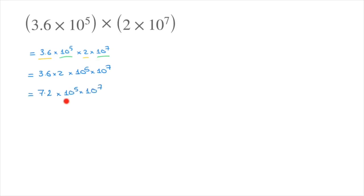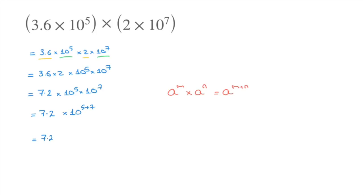To multiply 10 to the power of 5 and 10 to the power of 7, we need to use our laws of exponents. Remember that if we have some number a raised to a power m, which is multiplying that same number a raised to a power n, then that equals a raised to the power of m plus n. In this instance, a would be 10. So we rewrite this as 7.2 times 10 to the power of 5 plus 7, which equals 7.2 times 10 to the power of 12.